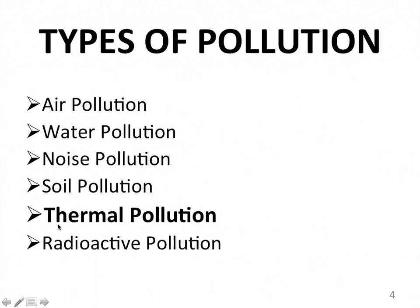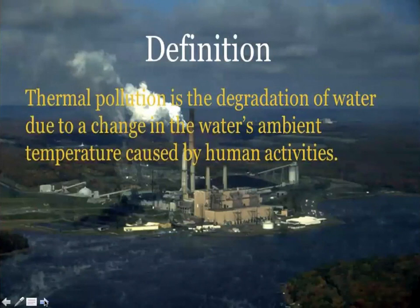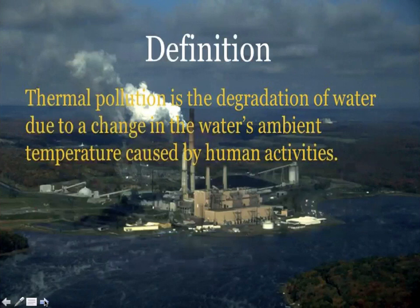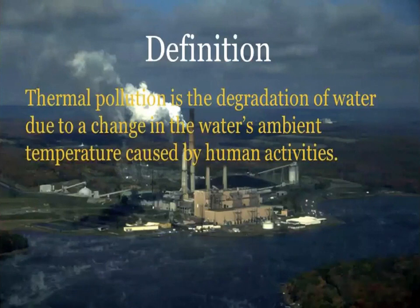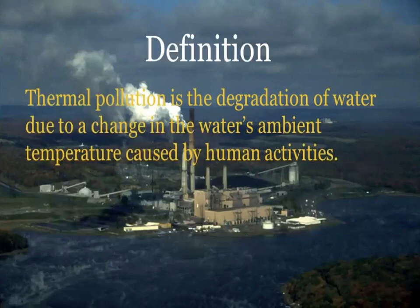In the present lecture, we will discuss in detail thermal pollution. As a definition, it is the degradation of water due to a change in the ambient water temperature caused by anthropogenic activities — that is, man-made activities. The ambient temperature is the air temperature of any object in the environment where it is stored. The term 'ambient' means related to the immediate surroundings; it is also referred to as the ordinary or baseline temperature, and this value is important for system design and thermal analysis.